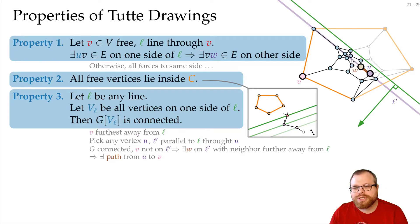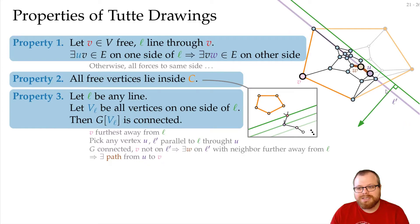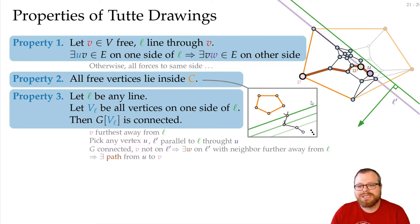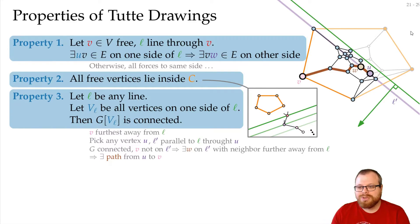We follow edges along the line until we reach a vertex W that has a neighbor on the far side. Moving the line through that neighbor, we can find the next edge, and the next, continuing until we reach the extreme vertex V. From V we cannot continue further — there is no vertex on that side — but V is a fixed vertex, so that's fine. No matter which vertex we have on this side of L, we can always find a path to V, so the whole subgraph is connected.